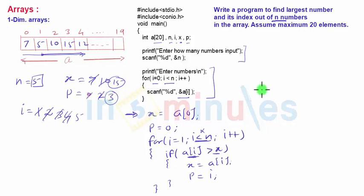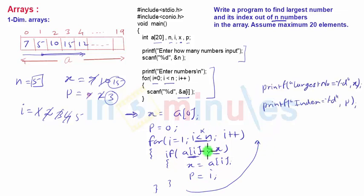Now we have to print the largest number and index using the printf command. After this loop is finished, we'll add two printf commands to print x and p. The first printf prints largest number = x, which is 15, and index = p, which is 3. Here the program terminates. Thank you.